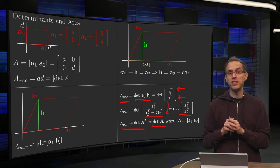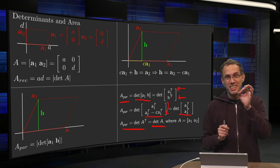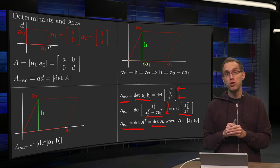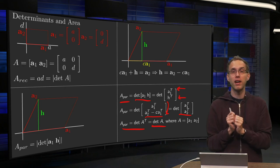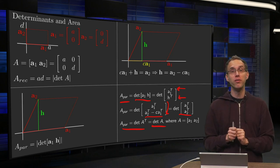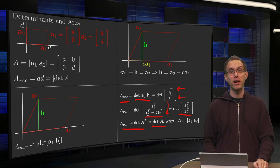The determinant of your matrix A gives you the area of your parallelogram. So that is what the determinant of a 2 by 2 matrix means: if you have two vectors a₁ and a₂, you can form a parallelogram, and the determinant of this matrix in absolute value will give you the area of your parallelogram.